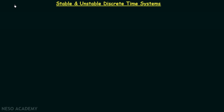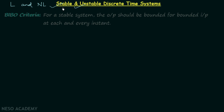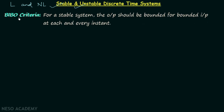In the last lecture we had a discussion on linear and non-linear discrete time systems. Now in this lecture we will understand how to find out if a given discrete time system is stable or unstable. For this we need to understand BIBO criteria — that is, bounded input bounded output criteria — which we already completed in the chapter on continuous time systems. Here we are simply revising it one more time.